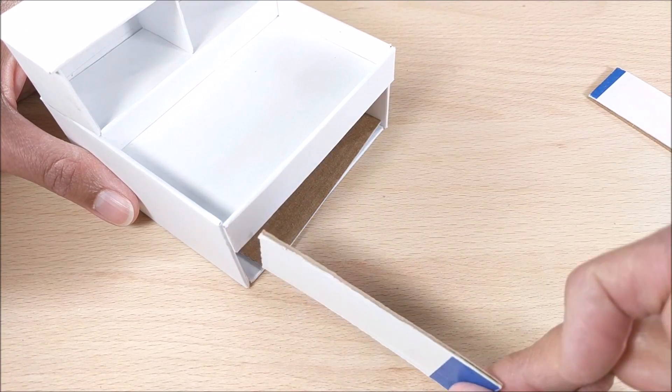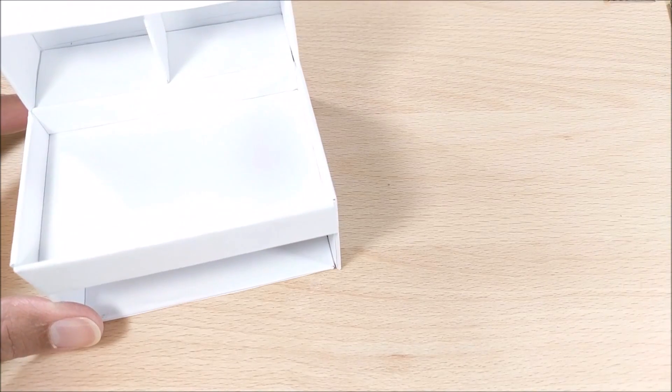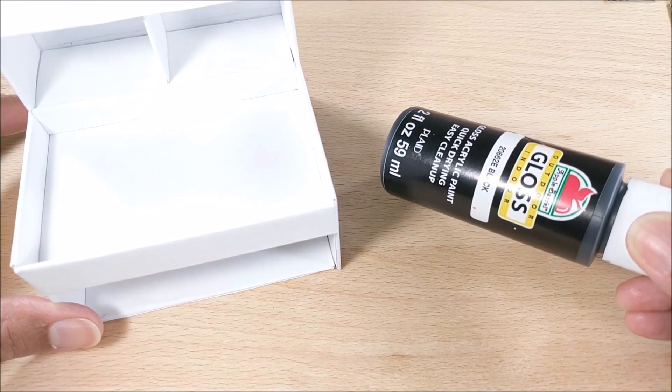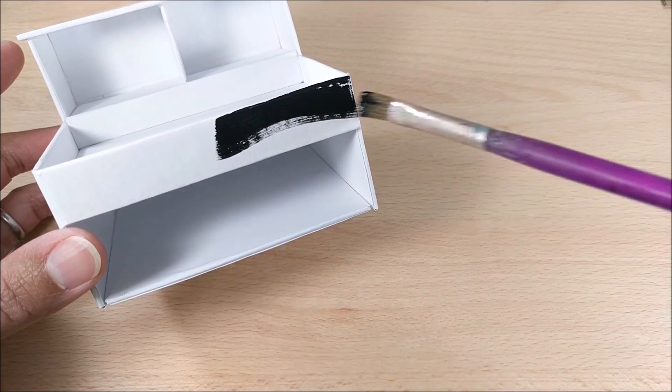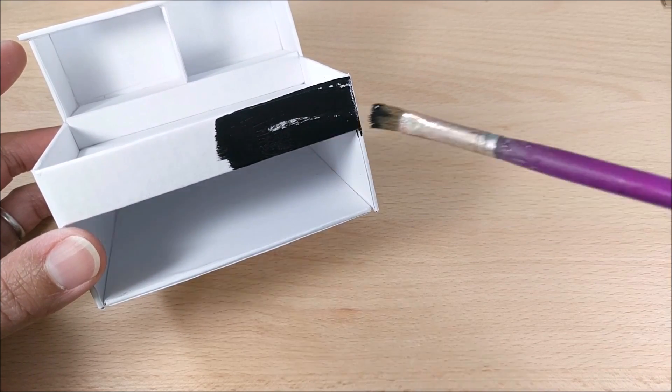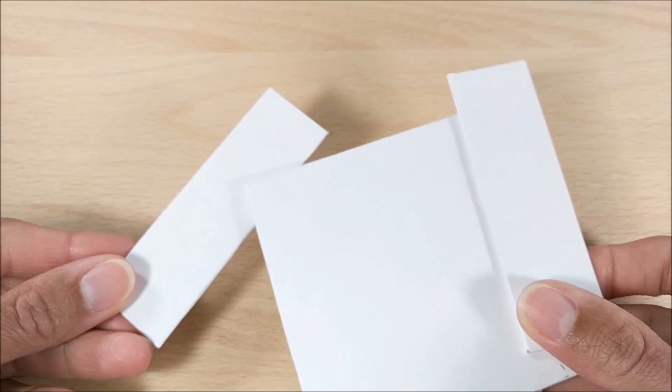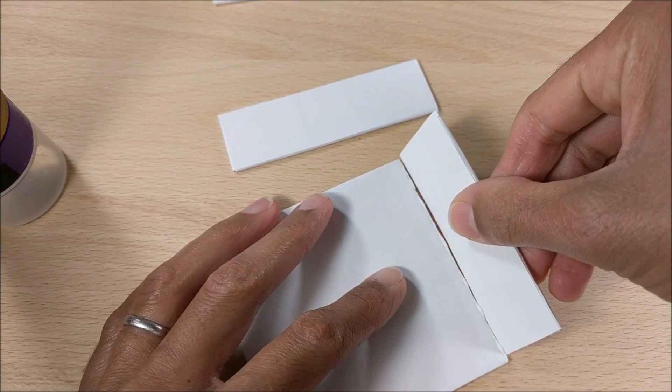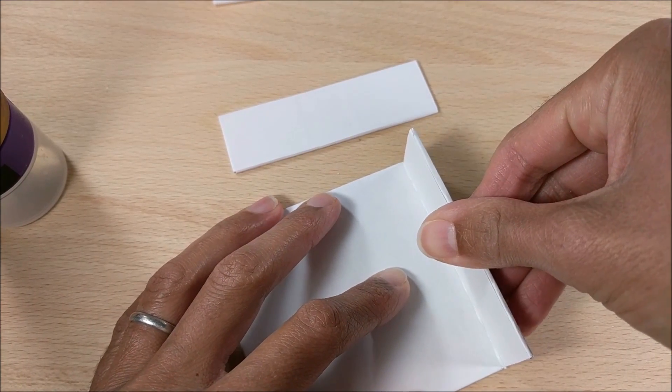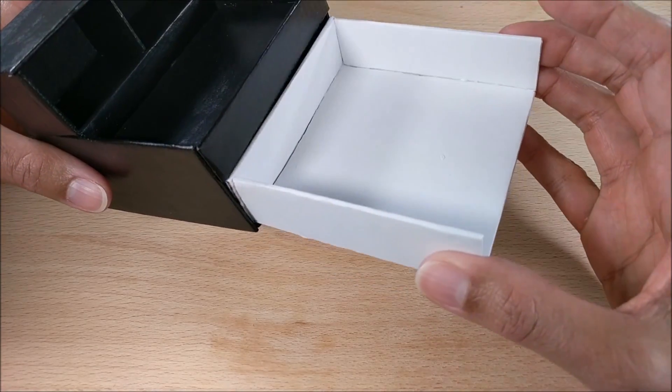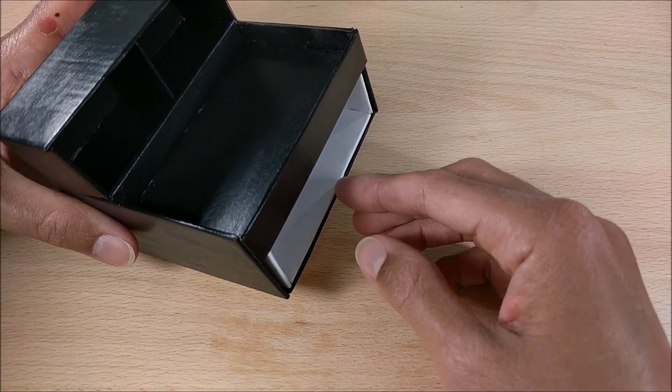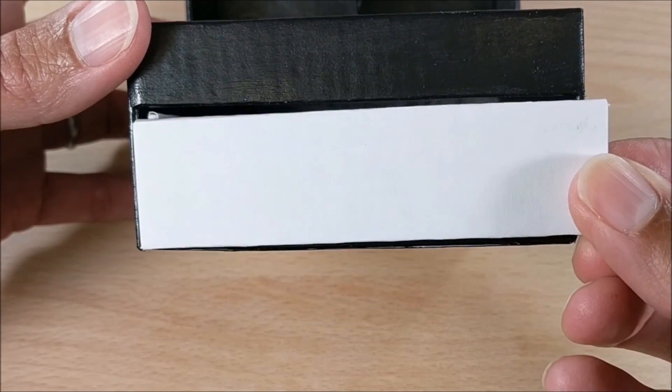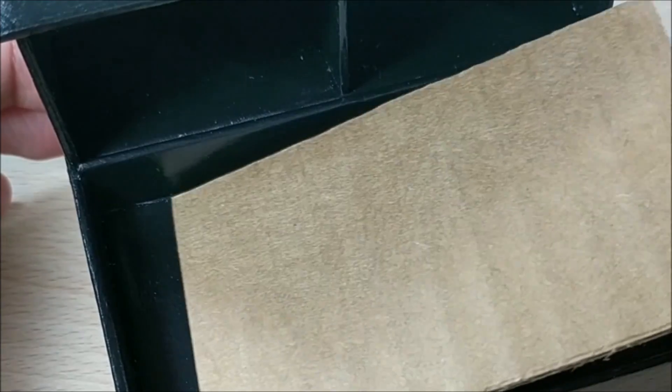Once wrapped, I paint my frame with glossy black acrylic paint, then assemble my drawer, confirm it fits, and just cutting out one additional piece for the front then I glue and paint.